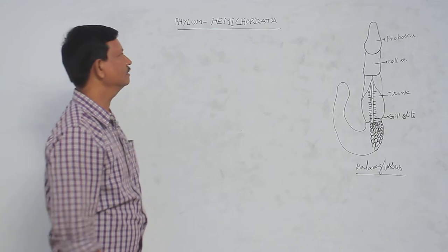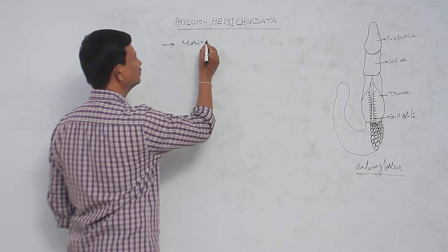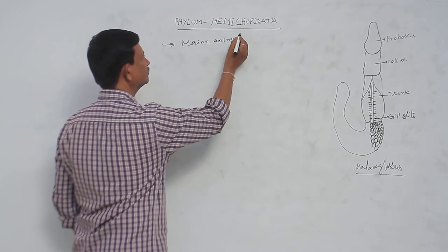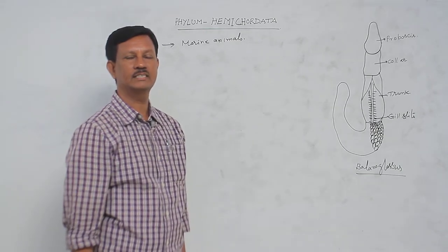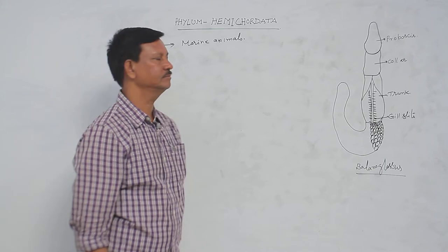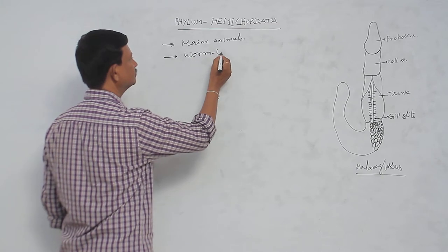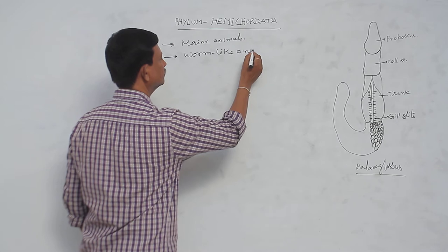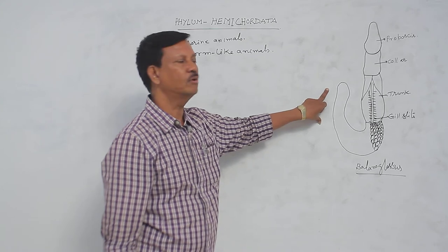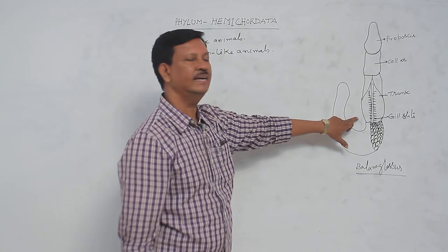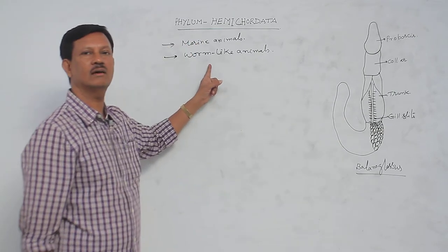The main characters of hemichordates: these are marine animals — all animals are found in marine water. They are worm-like animals. As you can see in the diagram, the body is elongated and cylindrical, resembling worms, hence they are known as worm-like animals.